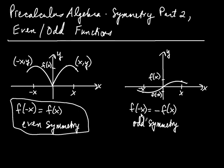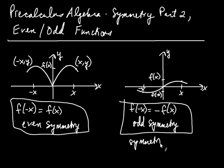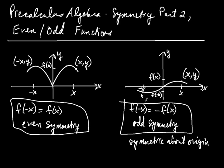Odd symmetry — or symmetry about the origin. If the point (x, y) is on the graph, then so is the point (negative x, negative y). So when a function has odd symmetry, we say it's symmetric about the origin, and this is the same as saying f of negative x equals negative f of x.